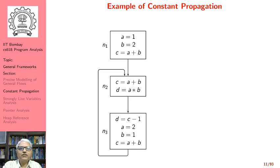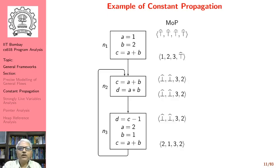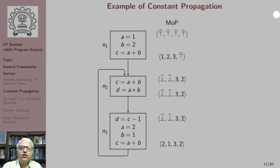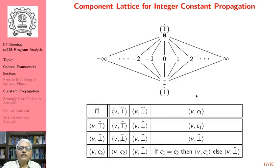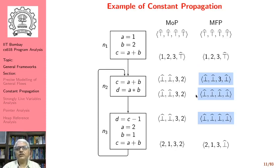This is the example of constant propagation that we had seen before. Starting with the top value, the MOP tells us that the value of C and D are 3 and 2 respectively, whereas we compute MFP in which we find that the values are different — they are weaker in MFP than in MOP. This was the essential example that showed that MFP and MOP may not coincide for constant propagation.